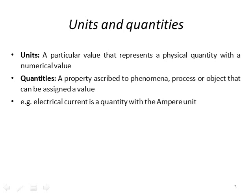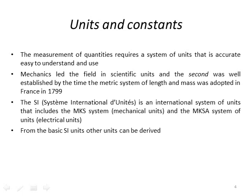We have units and quantities. A unit is a particular value that represents a physical quantity with a numerical value, and a quantity is a property ascribed to phenomena, process, or object that can be assigned a value. For example, electrical current is a quantity and the ampere is the unit. The measurement of quantities requires a system of units that is accurate, easy to understand and use, and universal — hopefully between different scientific or engineering disciplines and between different countries as well.